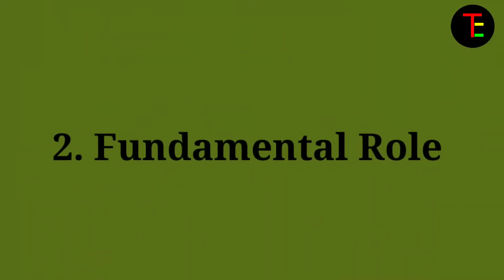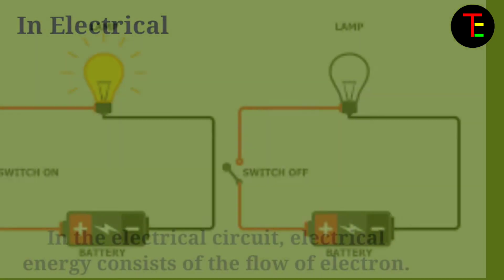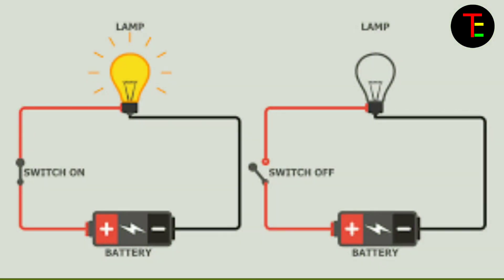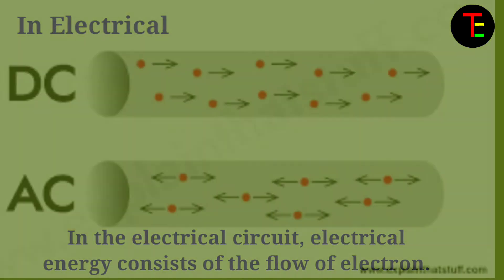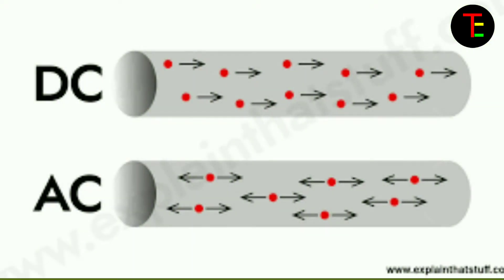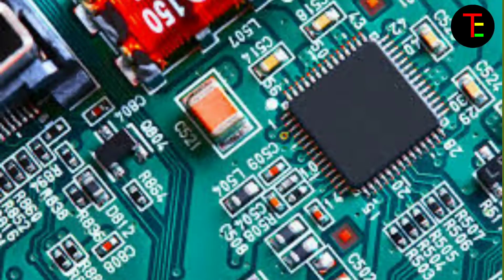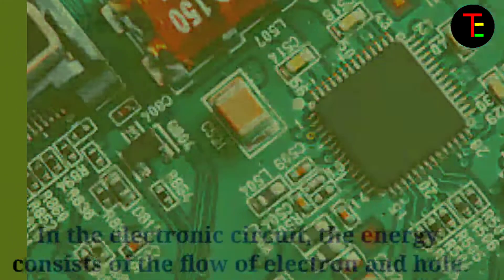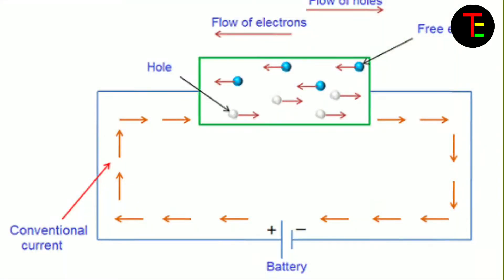No.2 Fundamental role: In the electrical circuit, electrical energy consists of flow of electrons. But in the electronics circuit, the energy consists of flow of electrons and holes as well.